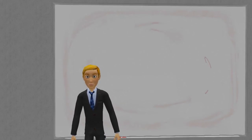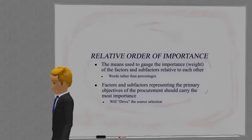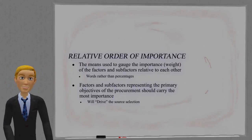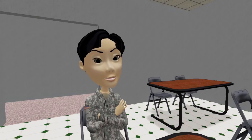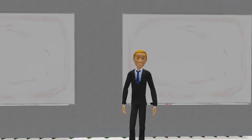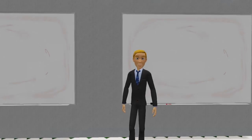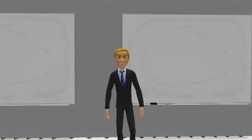The relative order of importance describes the significance of the evaluation factors and sub-factors when compared to each other. It is defined in the basis for award and ultimately drives the source selection decision. The relative order of importance is described using words and adjectives, not numerical percentages. We don't use numerical percentages because we want to preserve a degree of subjective judgment and discretion in the trade-off decision. If we use numbers, we run the risk of making the trade-off decision appear to be nothing more than a mathematical exercise.